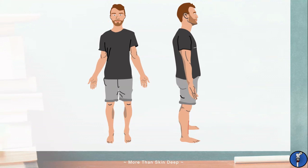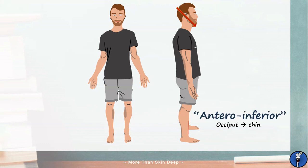One final thing to note is that these words are not always used on their own. Frequently, anatomists will combine terms to avoid using multiple words to describe the locations of things. An example of this is in describing the relationship of the chin to the occiput, or back of the head. We could say that the chin is anterior and inferior to the occiput, but a savvy anatomist would say the chin is in fact anteroinferior. Another example is between the nipple and armpit — we can combine terms to say that the armpit is posterolateral to the nipple.